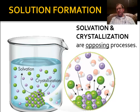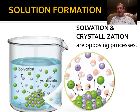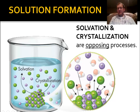When looking at a solution forming in a beaker, the ions are being pulled apart off of a big chunk of salt at the bottom. That process of solvation is balanced by crystallization. You can see ions being pulled off of the heap, but there are also positive and negative ions being pulled back in, being attracted back into the piece. So when a solution is forming, particles are being pulled off but also being added back on.